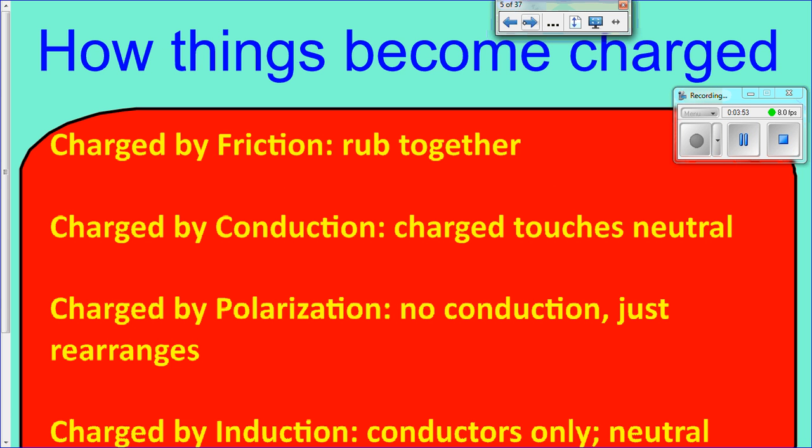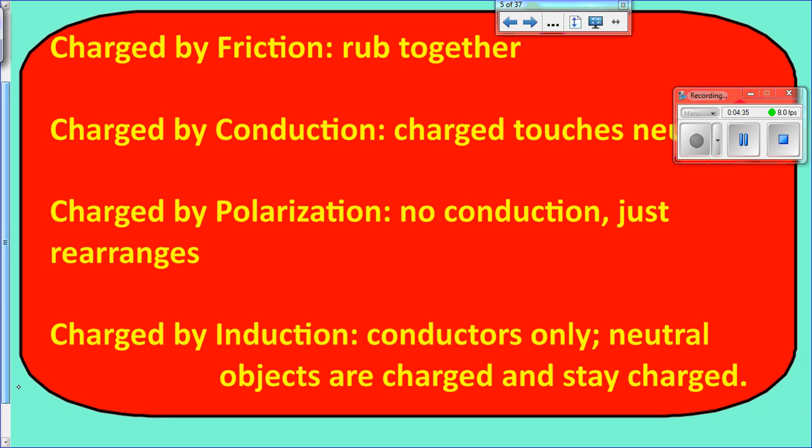Okay. Now, to the main focus of this video. The main focus of this video is we're going to talk about how do things become charged. Since electrostatics is all about charges, we're going to talk about what those four methods are. So there's four ways that items can become charged, and that's as follows. There can be charged by friction, and that's when things rub together. The second one is charged by conduction. This is where a charged object touches a neutral object. Then there's charged by polarization, and that is where there is no conduction, meaning there's no flow of charges. There's just a rearrangement of charges. And then the fourth and final one is charged by induction. And what that is is that is going to be primarily only for conductors, so insulators are not in this category. And this is where neutral objects are charged and they stay charged.